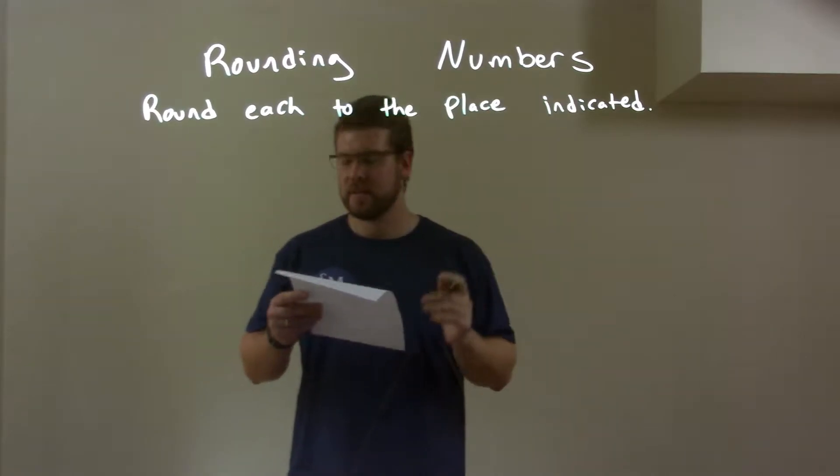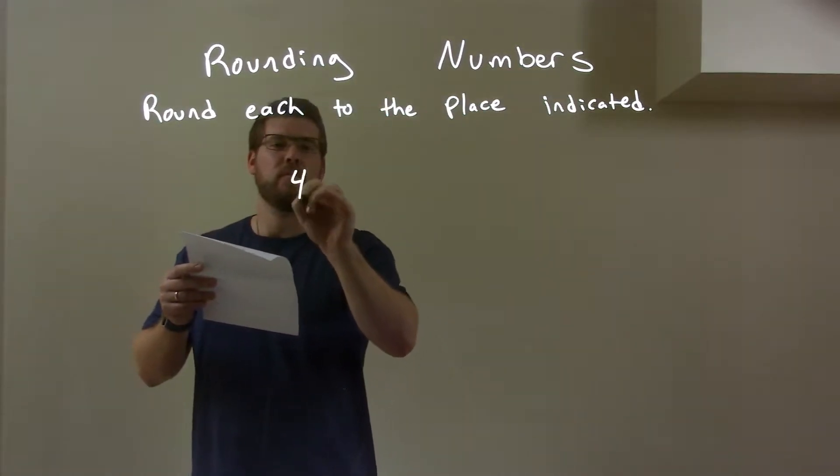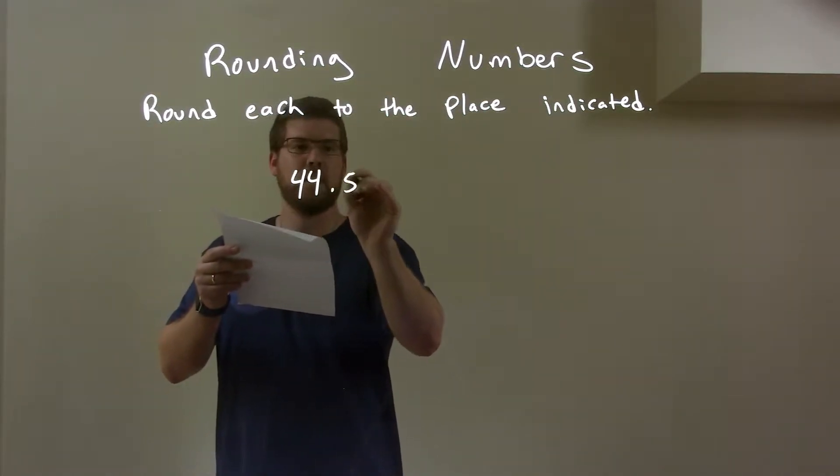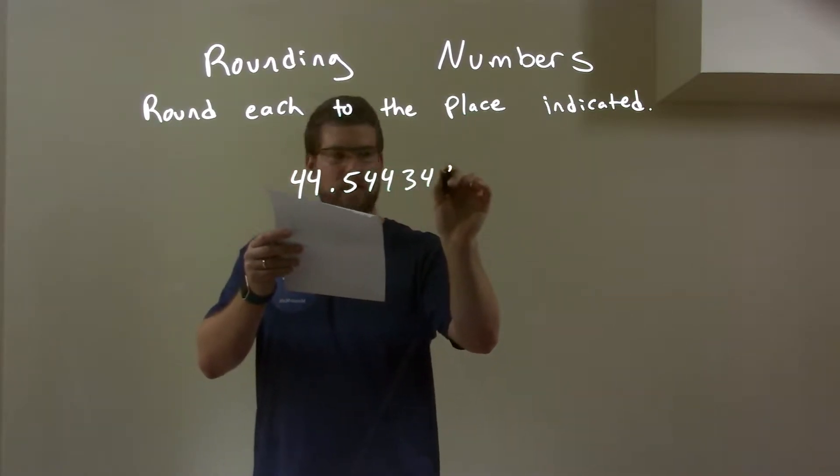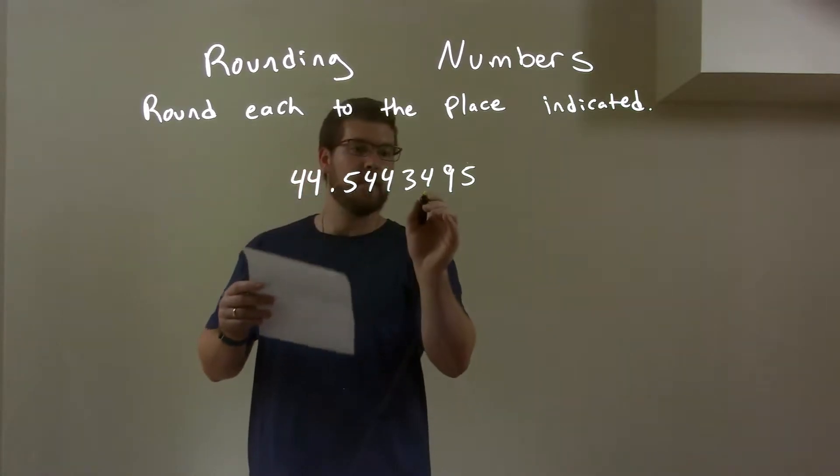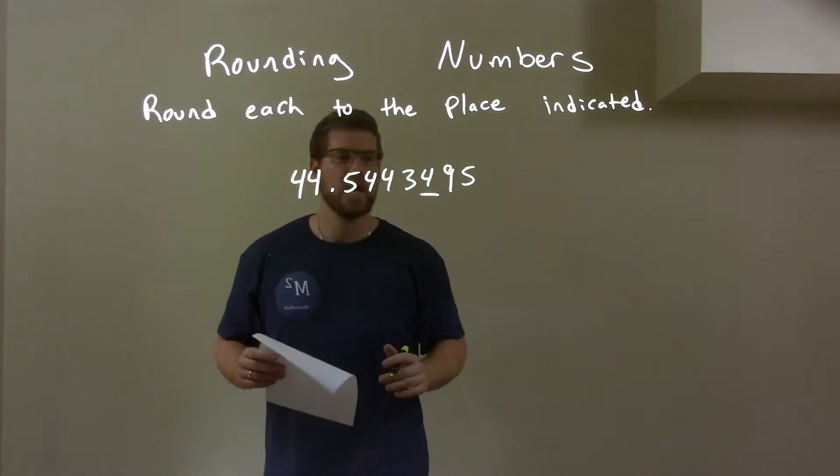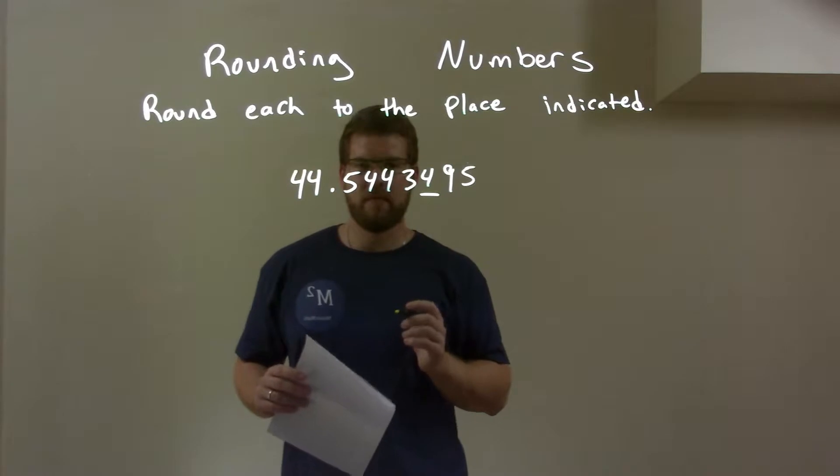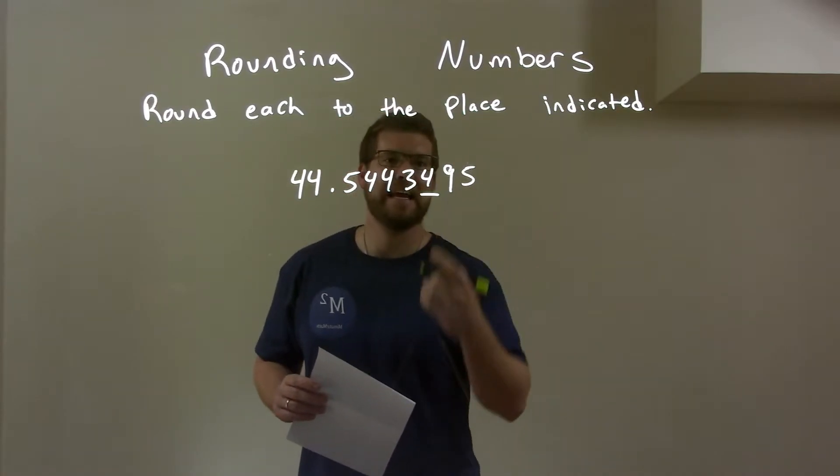So, if I was given this number 44.5443495, and we're rounding here on this 4, I look to the right of that 4. The right of that 4, I see a 9.